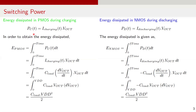This charging and discharging of the load capacitance during switching leads to power dissipation. Let's go step by step to understand energy dissipation that occurs in both the PMOS and NMOS transistors. To find the energy dissipation in PMOS during charging, first we calculate the instantaneous power, which is the product of the charging current I_charging and output voltage Vout. Then the energy dissipated is obtained by integrating the instantaneous power over the charging duration, from t equals 0 to t equals R_time, where R_time is the time it takes for Vout to rise from 0 to VDD.